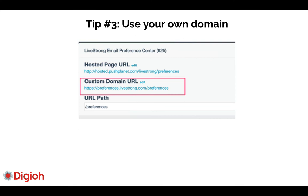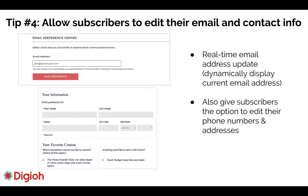Tip number three: use your own domain. People want brand consistency — when they click through they should still see your brand, your header, your footer, everything intact. Tip number four: allow them to edit their email and contact info. Sometimes people unsubscribe because they want to switch from their Gmail to their work email or vice versa. Allow them to change their email, see which address is opted in, and edit other data so you can send even more personalized, relevant emails.